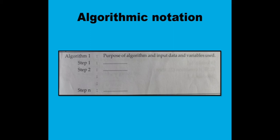We will need to write algorithms for different data structure operations. In the first part of an algorithm, there are a total of n number of steps. In step one, we declare the purpose of the algorithm, input data, and variables. For example, for addition: the purpose is addition, input is any two numbers, stored in variables A and B.